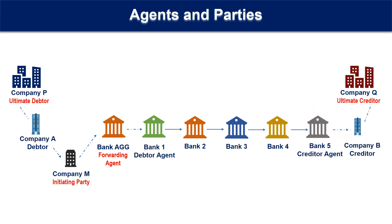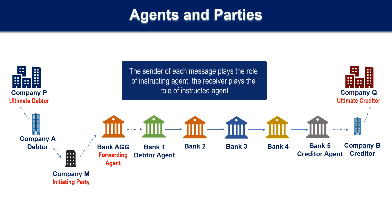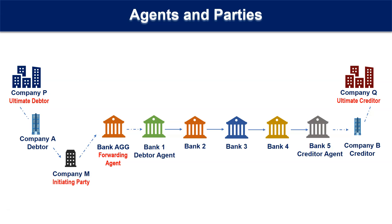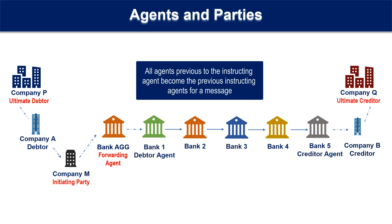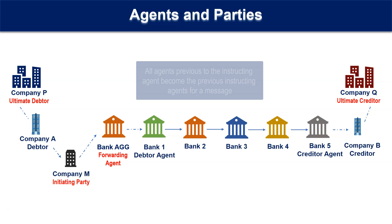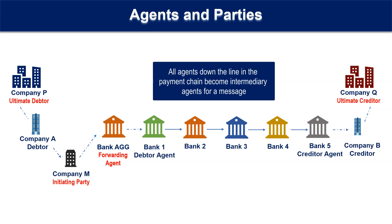The roles of the instructing, instructed, previous instructing, and intermediary agents keep on changing from one message to another that gets sent in the payment chain. The sender of each message plays the role of instructing agent; the receiver plays the role of instructed agent. All agents previous to the instructing agent become the previous instructing agents for a message. All agents down the line in the payment chain become intermediary agents for a message.